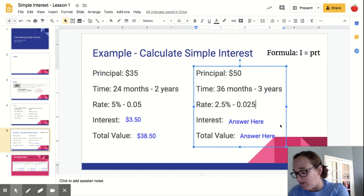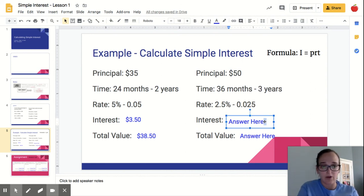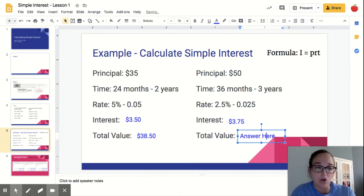So 50 times 3, that's 150. Times 0.025. And I get $3.75. And then for my total value, I'm going to add that $3.75 to my $50. So I get $53.75 is my total value in my account.